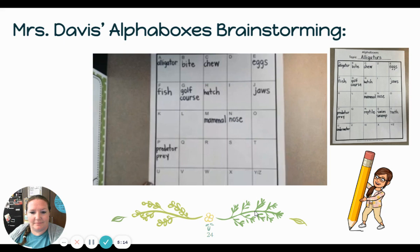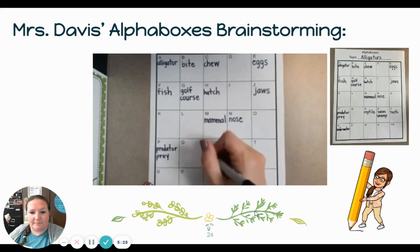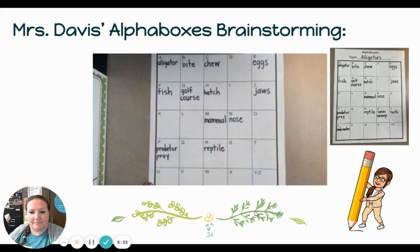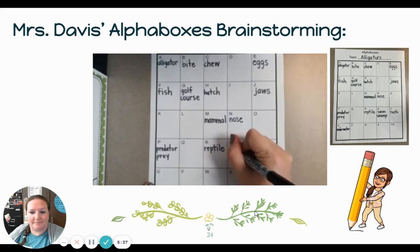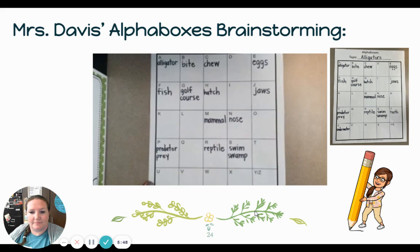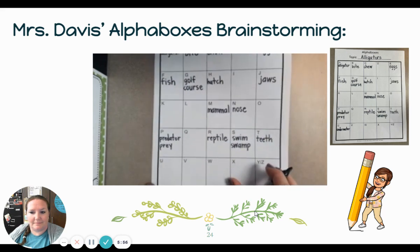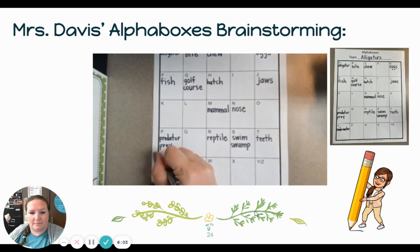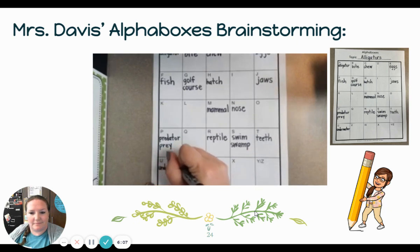Those would be the animals that they eat — just like in our food chain lessons we talked about. Q — nothing for Q. R — reptile. I know alligators are reptiles. S — swim. Alligators can also be found in a swamp. T — alligators have nice teeth. U — I know about underwater; they do spend some of their time underwater.